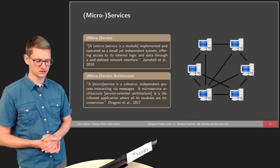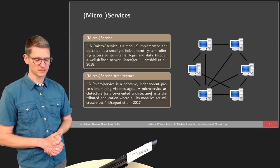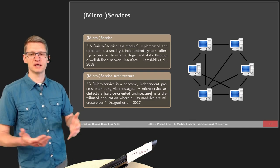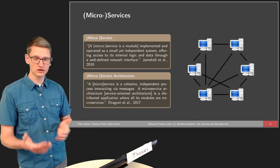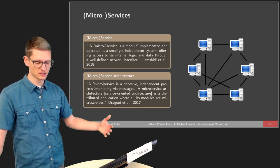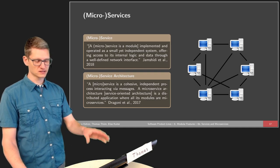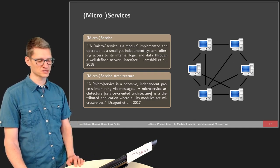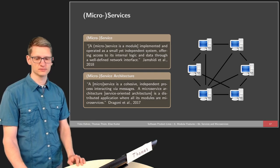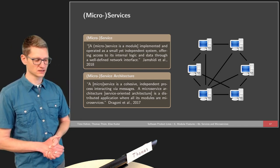A microservice architecture is a distributed application where all of its modules are microservices. We have some independent parts of our software that communicate via messages. A service-oriented architecture or microservice architecture means we have several of those modules that communicate with each other. We have several computation nodes, and the edges between them indicate which services are communicating and exchanging data.